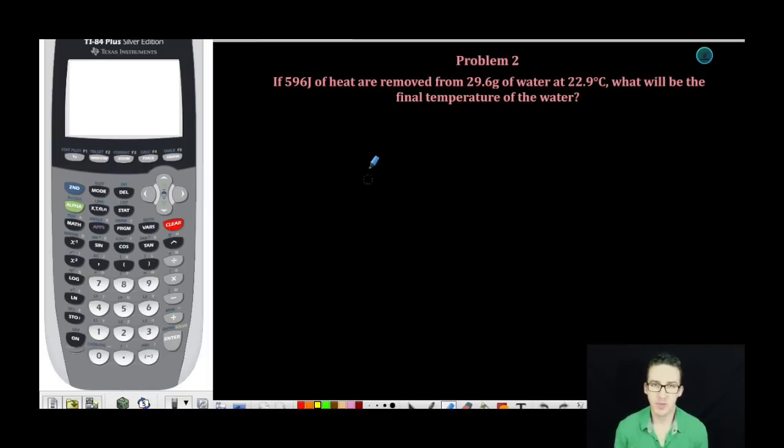Hey, let's take a quick look at problem number two. We are told this time that if 596 joules of heat are removed from 29.6 grams of water at 22.9 degrees Celsius, what will be the final temperature of the water?